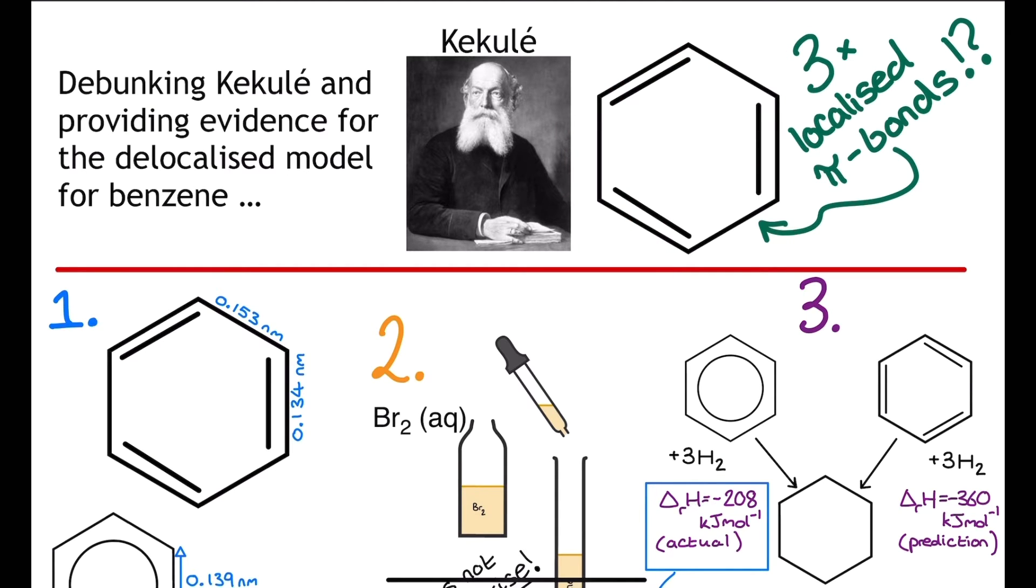This representation for the structure is actually still widely used in diagrams, but thanks to some work by other scientists we are now able to know more about what we can describe as the delocalized electron model for benzene. So instead of three localized pi bonds, we now describe benzene as having delocalized pi bonds, and we can also describe it as a delocalized pi system in exams.